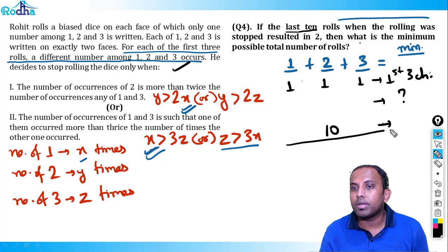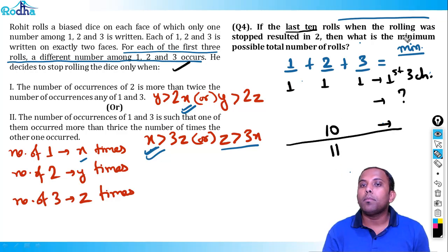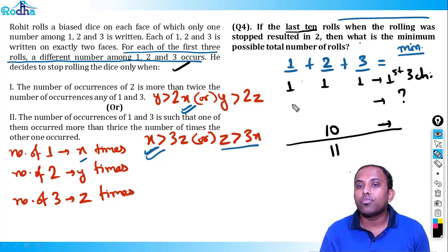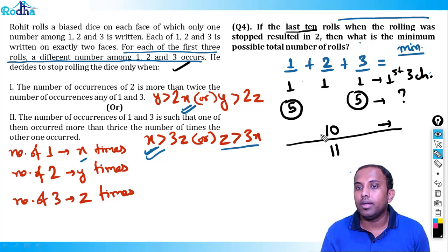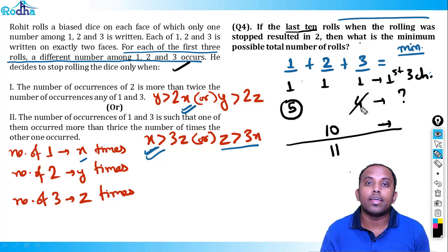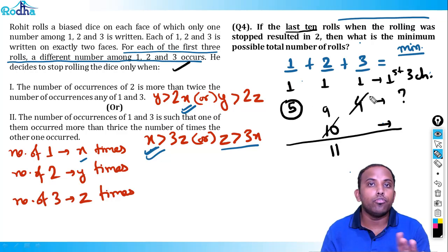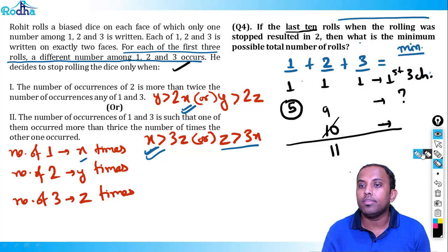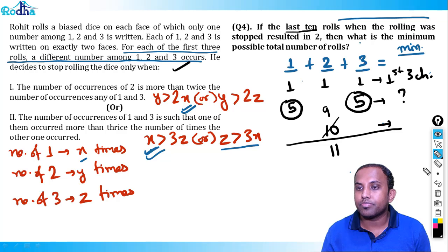To confirm: after the first three rolls (one each of 1, 2, 3), we have four more 1s and four more 3s alternating, then 10 twos at the end. That's 3 + 8 + 10 = 21 rolls total, with x = 5, y = 11, z = 5. So 21 is the minimum possible total number of rolls.